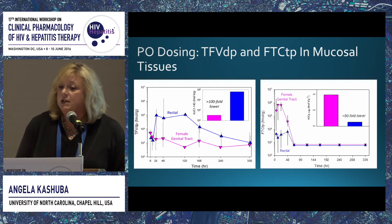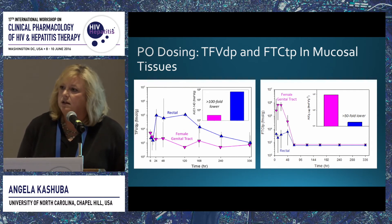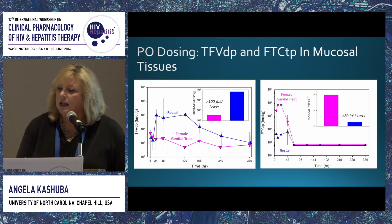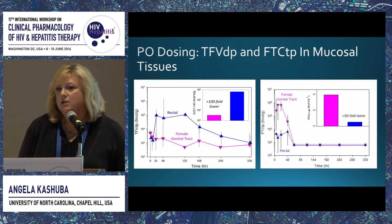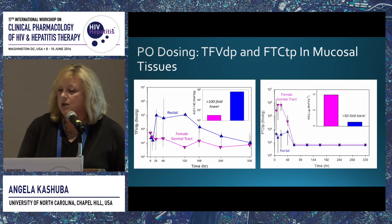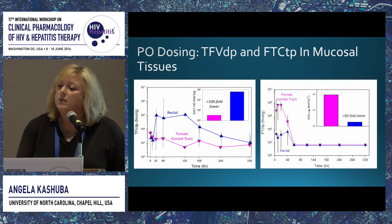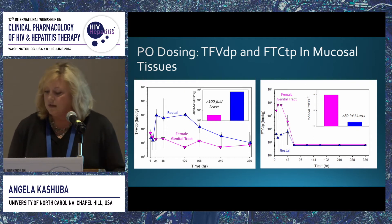My laboratory decided to evaluate whether we could use mucosal tissue concentrations with systemic therapy — Truvada — to understand dosing strategies in individuals at risk for HIV. These are data for tenofovir diphosphate on the left and FTC triphosphate on the right in mucosal tissues. Female genital tract tissues are in pink — we combined those because vaginal and cervical tissue concentrations were very similar — and colorectal tissue concentrations are in blue. We see very different penetration: tenofovir diphosphate exposure is high and prolonged in colorectal tissue, while FTC triphosphate concentrations are much higher in the female genital tract.